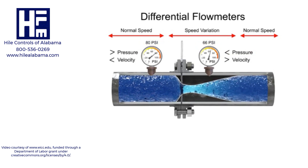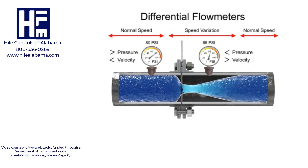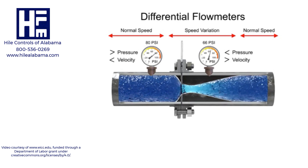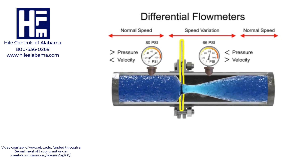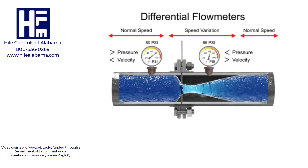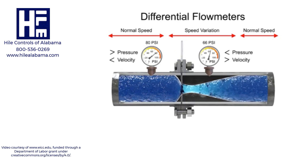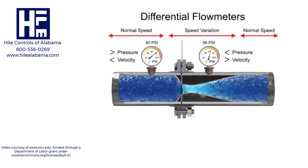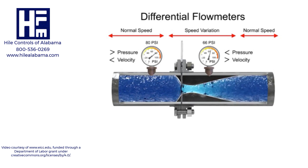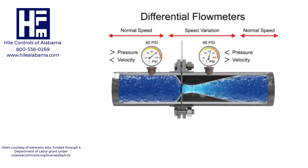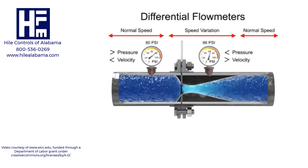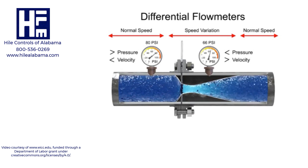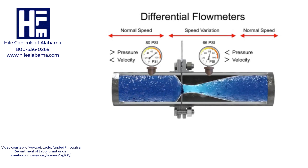As the fluid flow rate increases through the pipe, back pressure on the incoming side increases due to the restriction of flow created by the orifice plate. The pressure of the fluid at the downstream side of the orifice plate is less than the incoming side due to the accelerated flow. With a known differential pressure and velocity of the fluid, the volumetric flow rate can be determined.